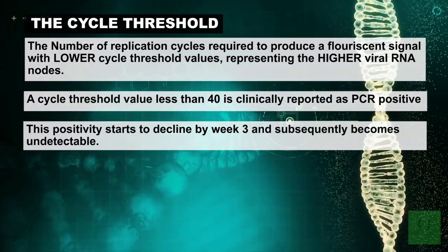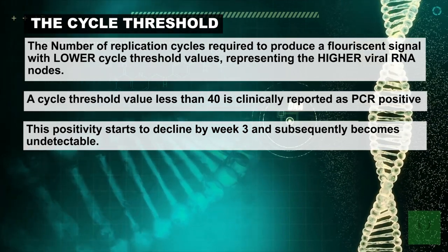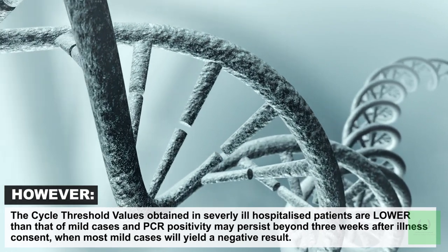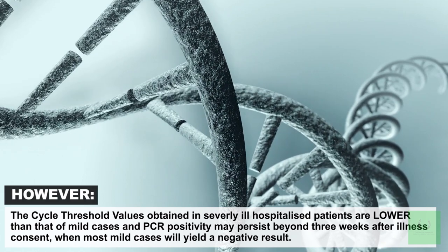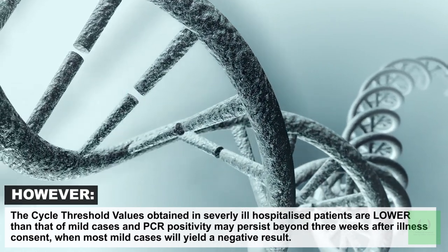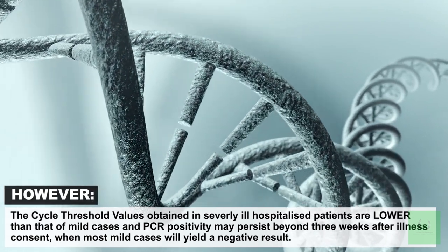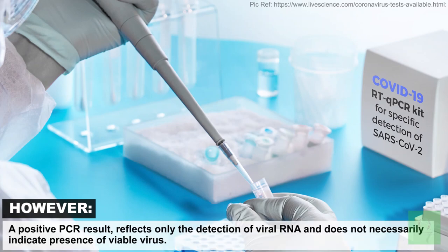This positivity starts to decline by week three and subsequently becomes undetectable. However, the cycle threshold values obtained in severely ill hospitalized patients are lower than the cycle threshold values of mild cases, and PCR positivity may persist beyond three weeks after illness onset when most mild cases will yield a negative result. However, a positive PCR result reflects only the detection of viral RNA and does not necessarily indicate the presence of viable virus.